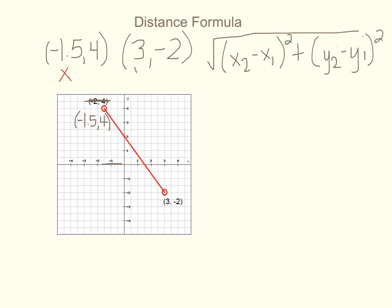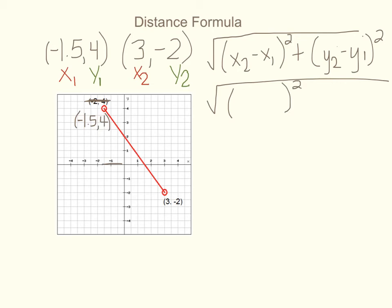x always comes first in each ordered pair, so my negative one point five is going to be x1, and my three is going to be x2. The y always comes second, so four is going to be my y1, and negative two is going to be my y2. Now I just need to put them in the correct spots. I'm square-rooting the whole thing — x2 is three, x1 is negative one point five, so three minus negative one point five. Be careful of the minus the negative there. And y2 is negative two, y1 is four, so negative two minus four.